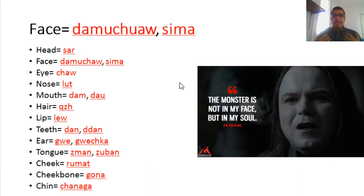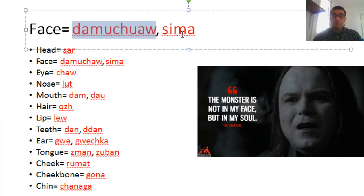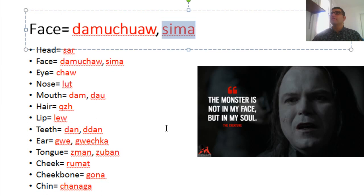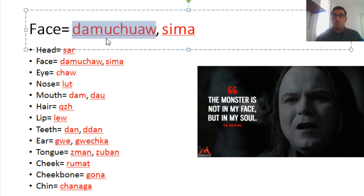Face in Kurdish — we have a couple of words. We have damucha, which means face, and we also have sima, which also means face. Sima can also be a person's name — for example, my father's cousin's daughter is named Sima. Damucha and sima both mean face, and we use them a lot, especially damucha colloquially, particularly in Sulaymaniyah.